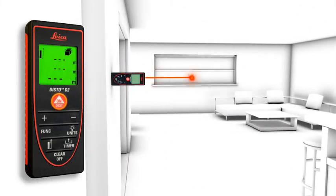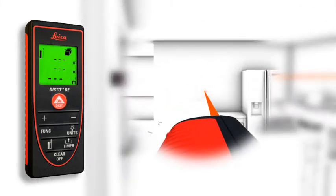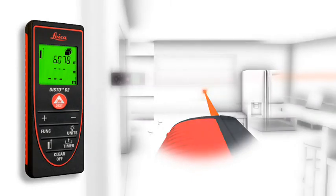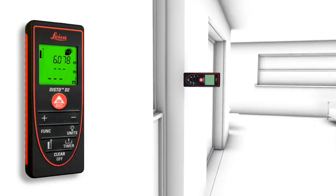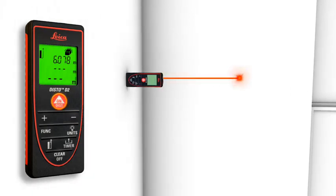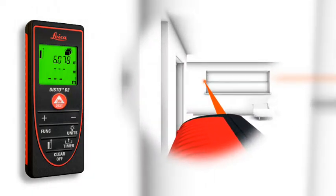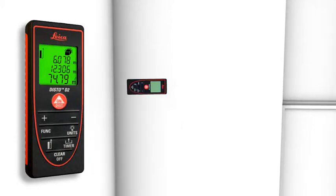Two to three simple measurements are enough and the Leica Disto D2 calculates fast and precise wall and ceiling areas as well as volumes. Single and final results can be displayed at the same time due to the three-line display.